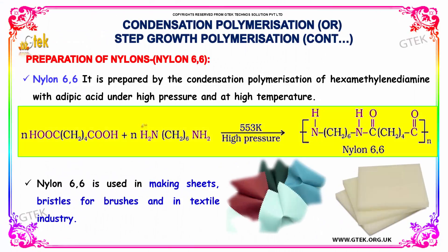Now let us discuss about the preparation of nylons. Nylon 66 is prepared by the condensation polymerization of hexamethylenediamine with adipic acid under high pressure and high temperatures. Nylon 66 is used in making sheets, bristles for brushes, and in textile industries.